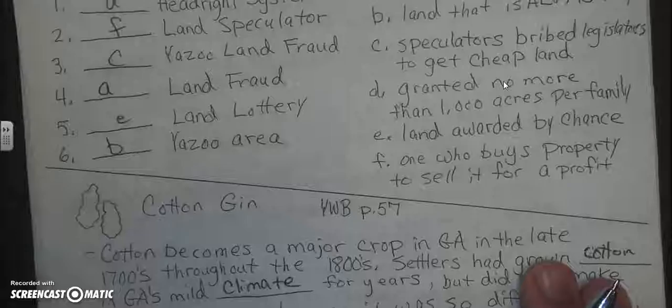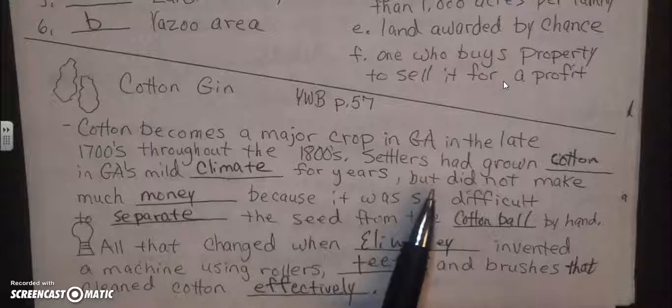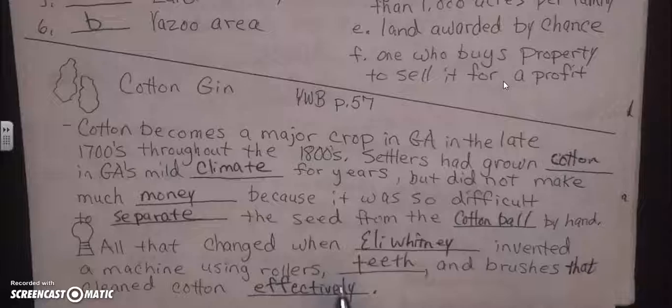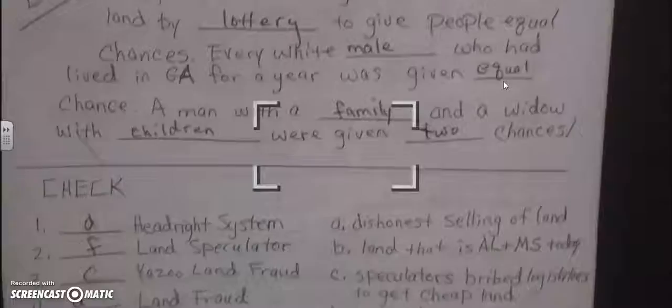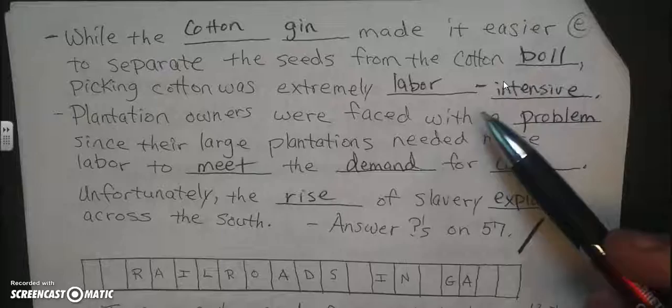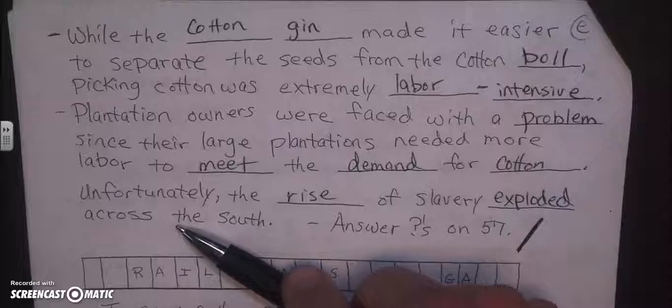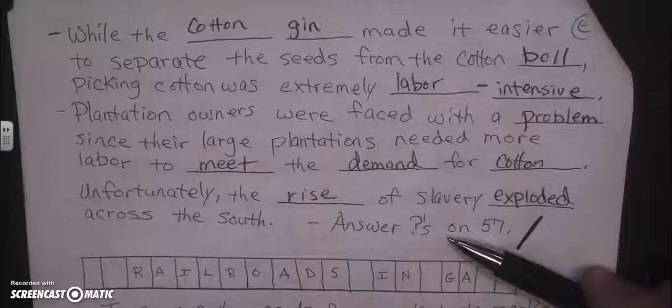Cotton became a major crop in Georgia in the late 1700s through the 1800s. Settlers had grown cotton in Georgia's mild climate for years but did not make much money because it was so difficult to separate the seed from the cotton ball by hand. All that changed when Eli Whitney invented a machine that used rollers, teeth, and brushes to clean cotton effectively. While the cotton gin made it easier to separate seeds, picking cotton was extremely labor intensive. This led to an unfortunate rise in slavery — slavery would explode across the South.